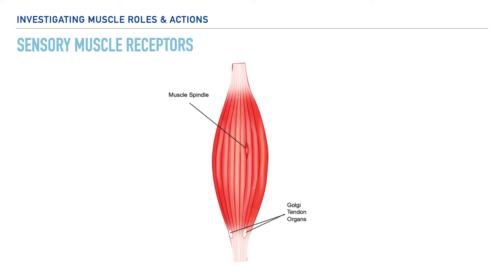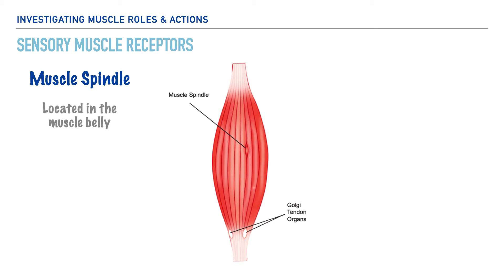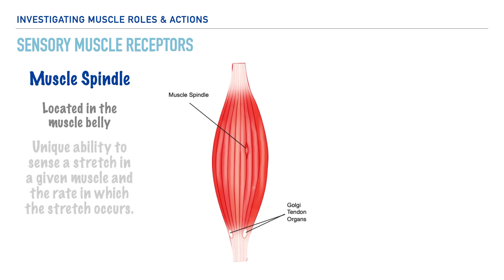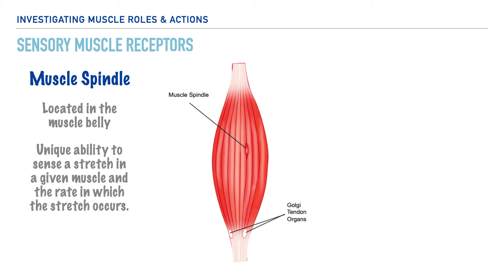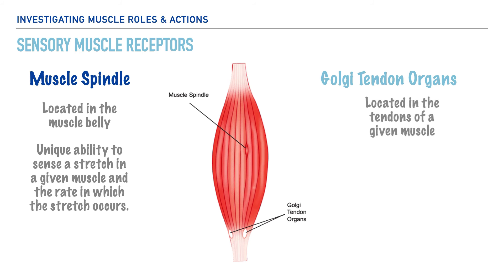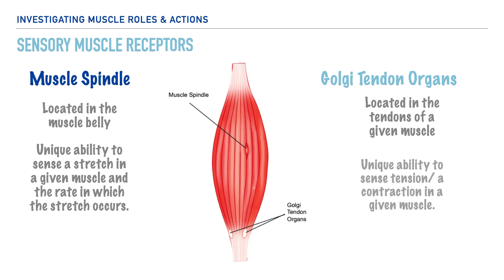Let's shift our attention to discussing sensory receptors that are specific to skeletal muscles and tendons. First up, we have muscle spindles, which are primarily found within the belly of a given muscle. They have a unique ability to sense a stretch that takes place within the body, and the rate or speed at which that stretch takes place. As for Golgi tendon organs, they are heavily concentrated in the tendons of a given muscle, and it's these GTOs that uniquely sense muscle tension and/or muscle contraction.